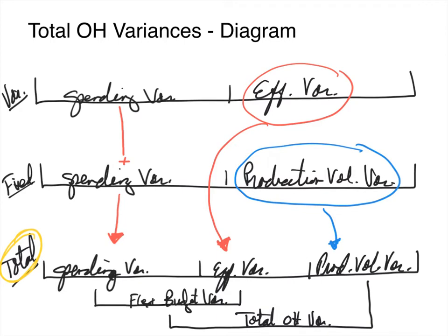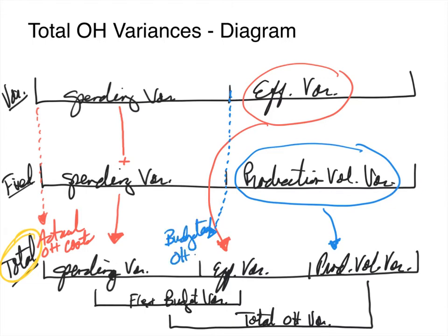Now I want to explain how we calculate the pegs in the total diagram. Peg one in the total diagram is calculated by taking peg one of variable plus peg one of fixed. This first peg represents our actual total overhead costs. The second peg in the total diagram is calculated by taking the second peg in variable plus the second peg in fixed added together, and this is called our budgeted overhead costs.